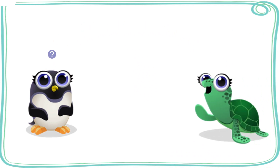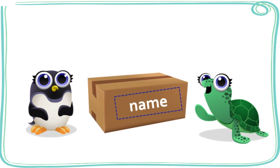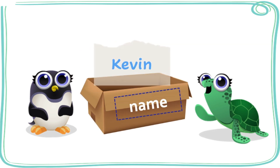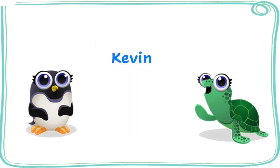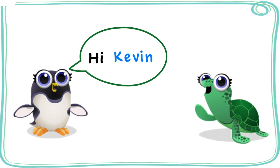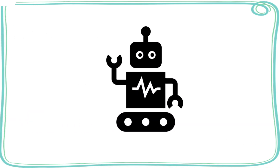Then if you ever need the name, you can just use the label to retrieve the box, open it up, and voila! You have the name and now you can use it! If you programmed a computer, like a robot, to remember people's names, it would do something like this.